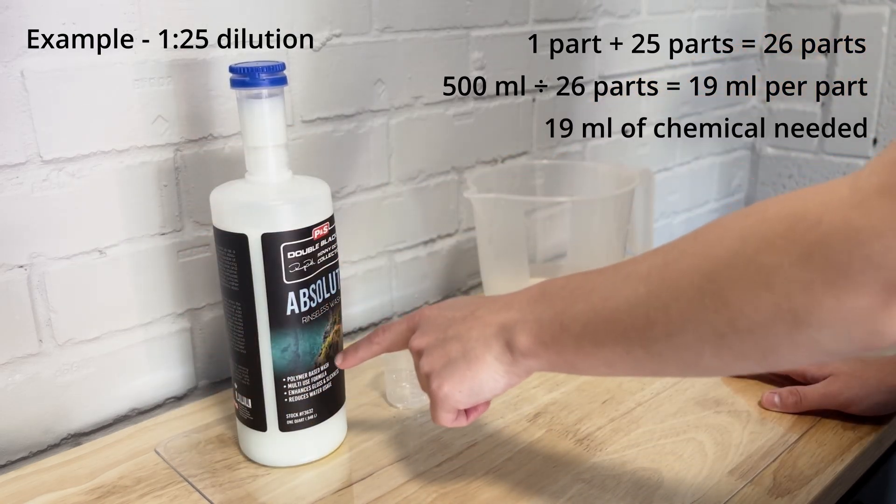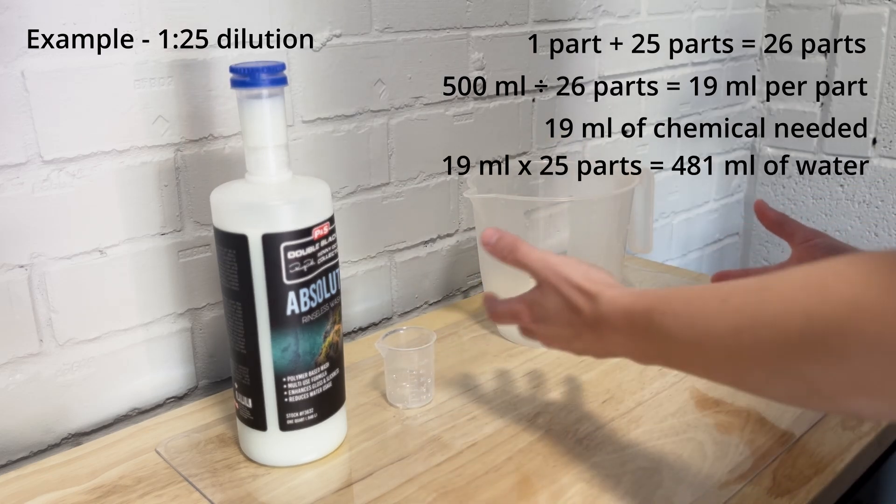So that means that we're going to have 19 milliliters of my actual product, so here I'm using Absolute Rinse this wash, and then we're going to have 19 times the 25 which is going to equal 481 milliliters of the water.